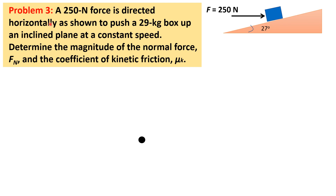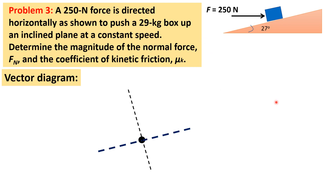Problem number 3. A 250 N force is directed horizontally to push a 29 kg box up an inclined plane at a constant speed. We are to determine the magnitude of the normal force F_N and the coefficient of kinetic friction μ_k. For our solution, we first identify the forces acting on the box in our vector diagram, defining the x-axis along the surface of the inclined plane and the y-axis perpendicular to it.